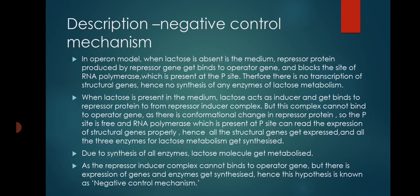When all three enzymes are synthesized, the lactose molecules get metabolized. Beta-galactosidase converts lactose into glucose and galactose. The permease enzyme allows the entry of lactose molecules inside the cell. When these enzymes are synthesized, only then will lactose be degraded or metabolized. Since the repressor-inducer complex cannot bind to the operator gene, the gene is expressed and enzyme synthesis takes place. This mechanism is therefore called the negative control mechanism.